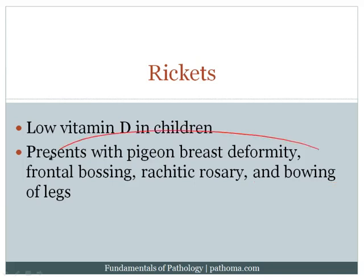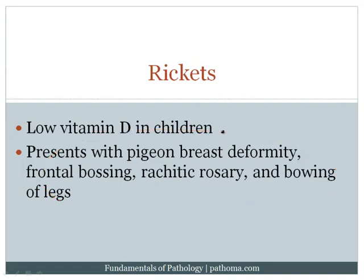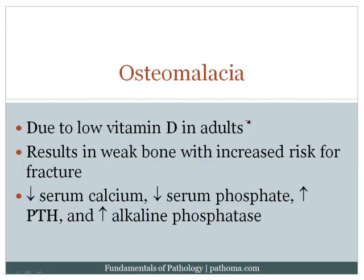The central theme in rickets is abnormal mineralization of osteoid, with deposition of osteoid in various places — for example, the rickitic rosary is due to osteoid deposition at the costal chondral junction. Board examiners want you to know about this osteoid deposition. When vitamin D deficiency arises in adults, we call that osteomalacia.